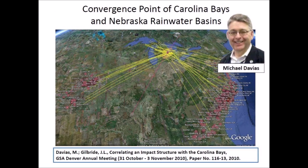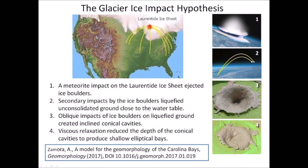The calculation of a convergence point of the Carolina Bays and the Nebraska Rainwater Basins at Saginaw Bay made possible the development of the Glacier Ice Impact Hypothesis, which provided a new estimate for the energy of the extraterrestrial impact. The Glacier Ice Impact Hypothesis, published in the journal Geomorphology in 2017, describes four mechanisms by which the Carolina Bays may have formed.